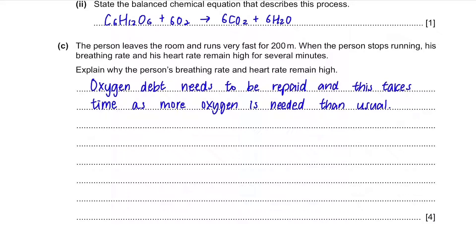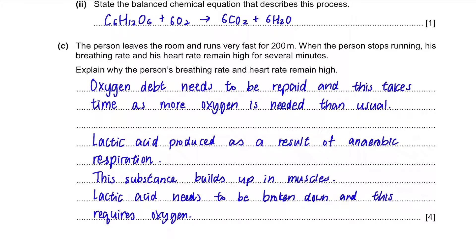Another product of anaerobic respiration is lactic acid. This substance builds up in muscles during anaerobic respiration and needs to be broken down to prevent it from harming the body. Remember the concept of oxygen debt and the build-up of lactic acid due to anaerobic respiration.